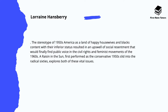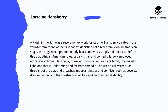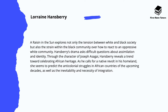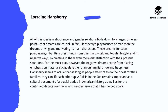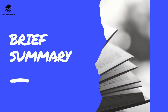The play A Raisin in the Sun was first performed in the conservative 1950s and became really popular especially in the 60s as it explores all of these vital issues. It was seen as a really important and revolutionary work, as it explores not only the tension between African American and white society, but also the strain within the African American community over how to react to a really oppressive white American community. Hansberry also addressed feminist questions far ahead of the time — through the character of Benita, she proposes that marriage is not necessarily for everyone, that women can and should have ambitious career goals, and she even approaches the abortion debate. This play remains really important as a cultural document of a crucial period in American history.